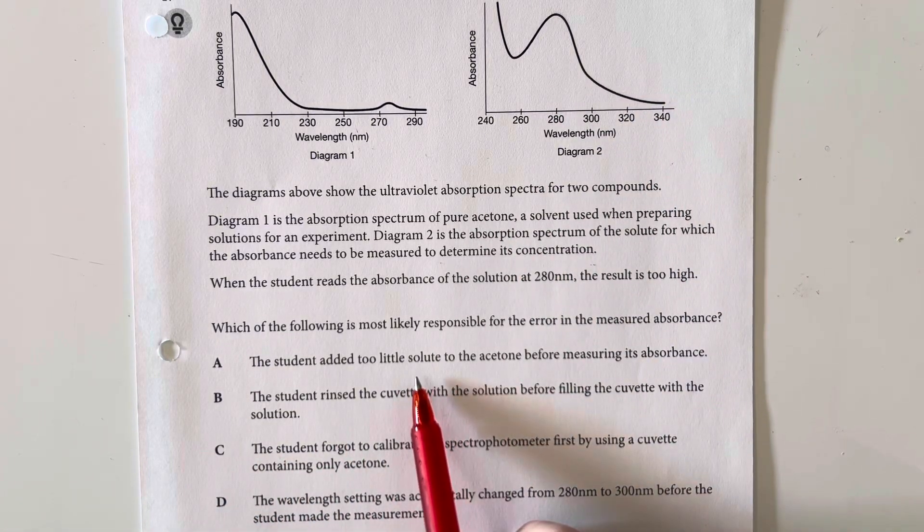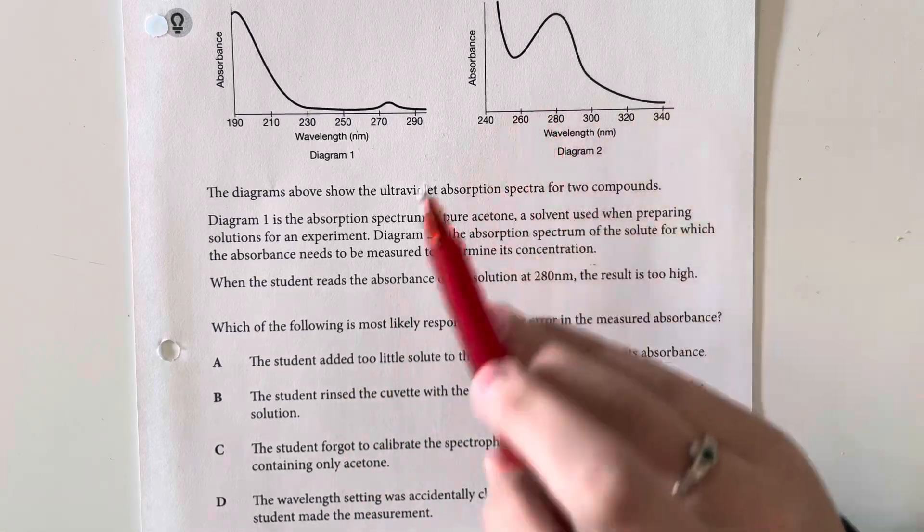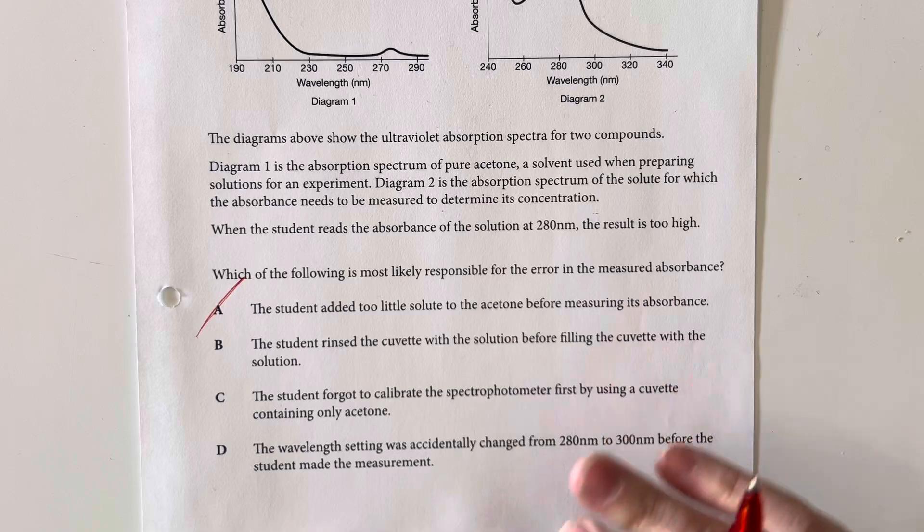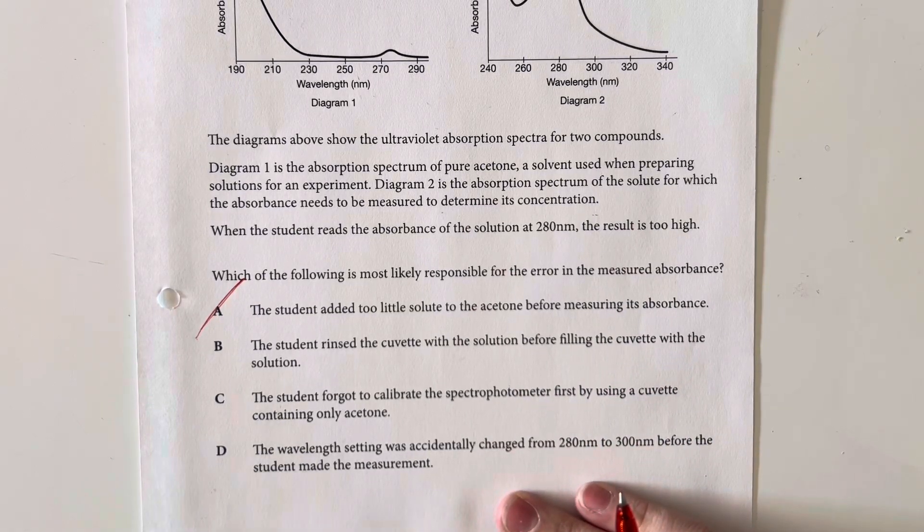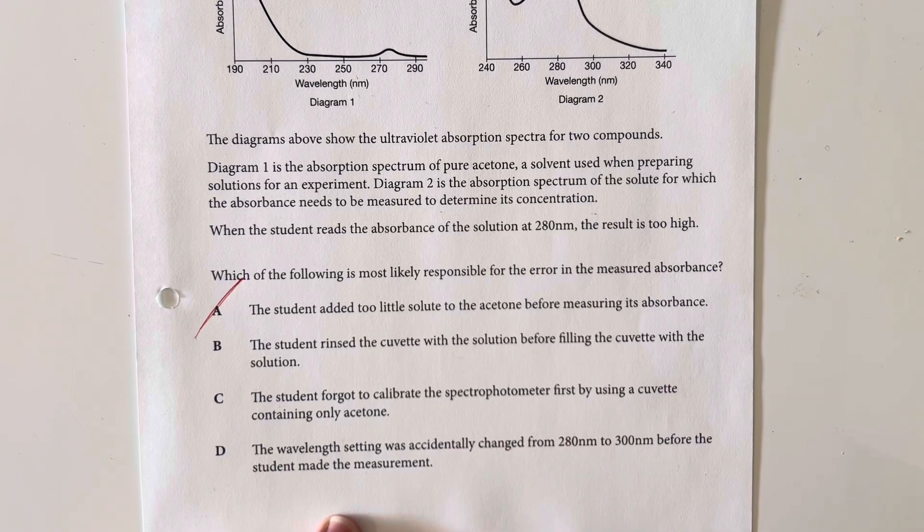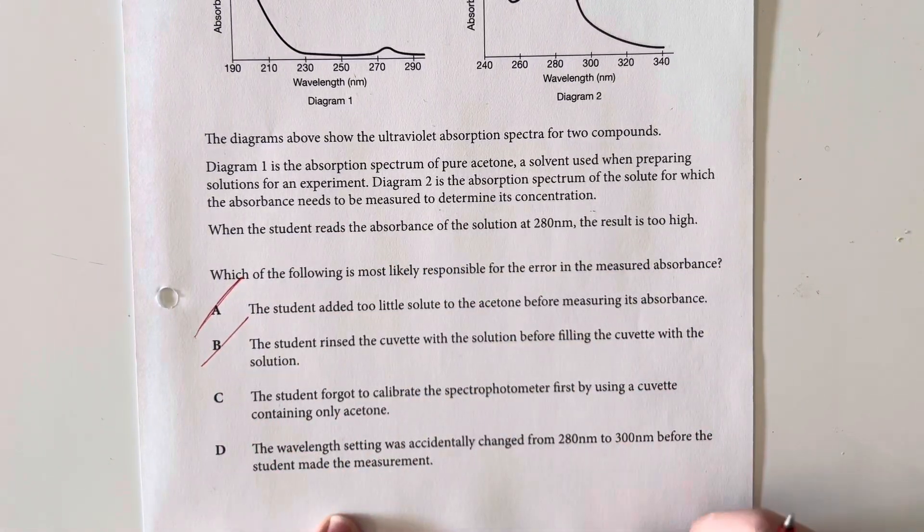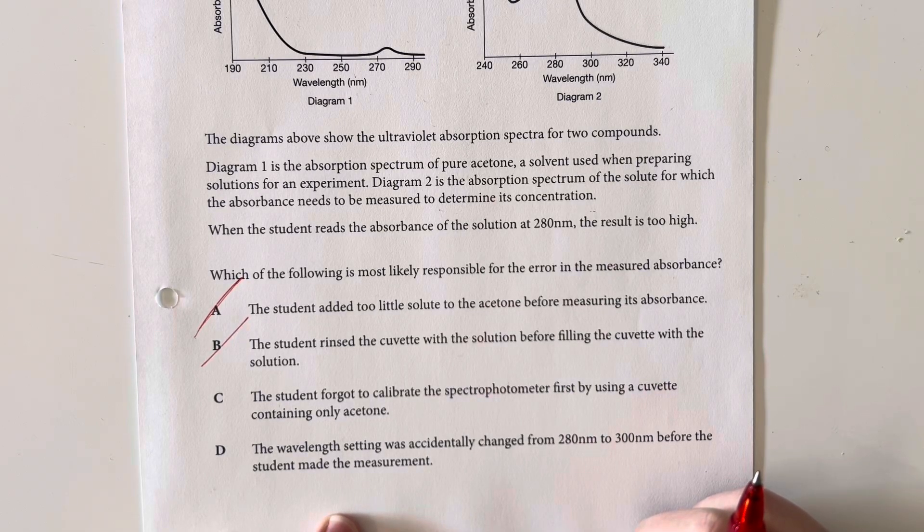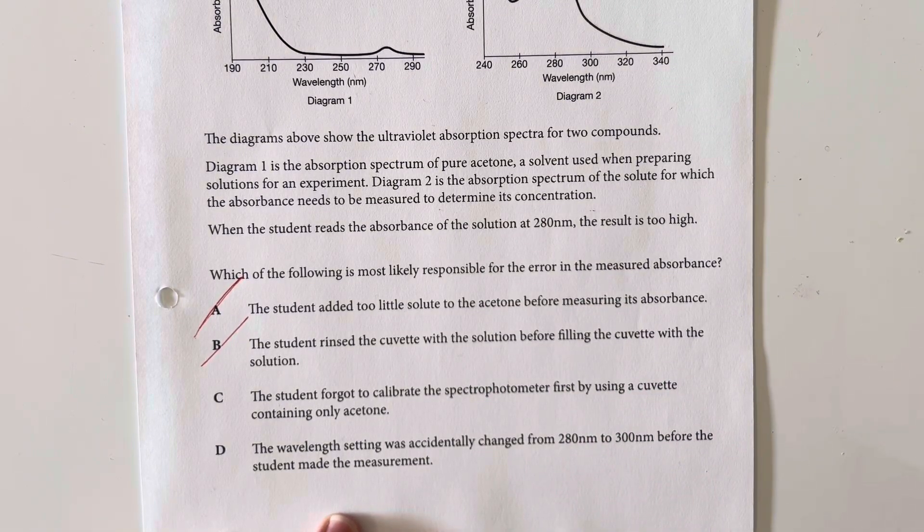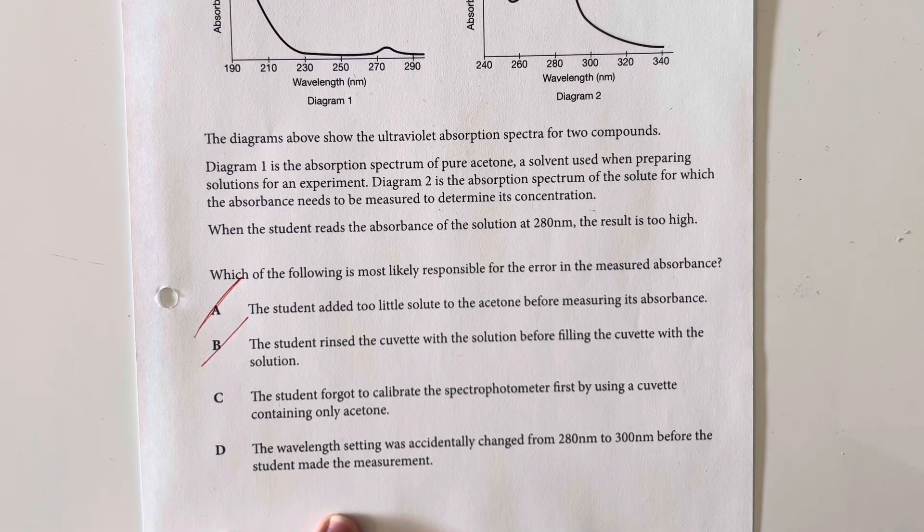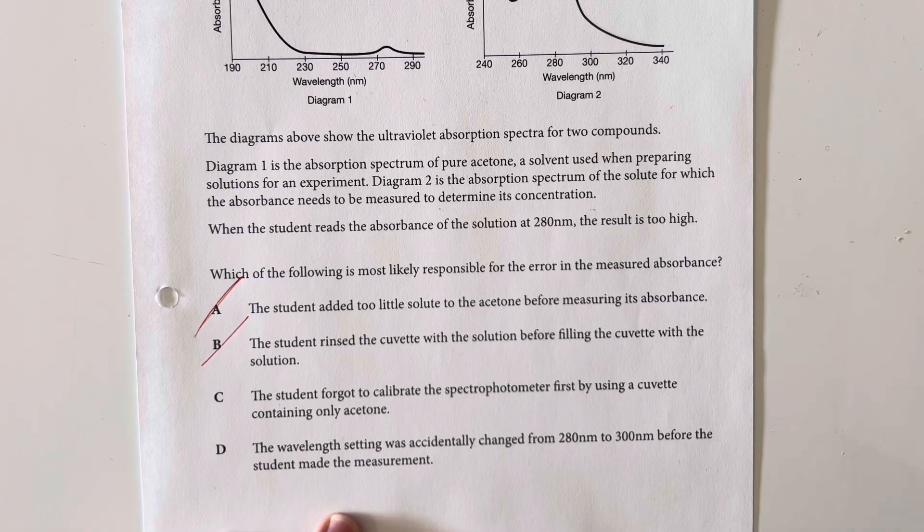Too little solute to acetone. We are looking for this to be acetone, so that's not going to match. Student rinse the cuvette with the solution before filling the cuvette with the solution. No, that would help. It would make sure it was clean. The student forgot to calibrate the spectrophotometer first by using a cuvette containing only acetone. That's one of the possible errors. We forgot to calibrate the machine.